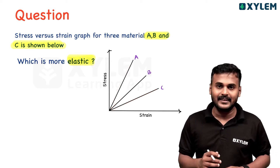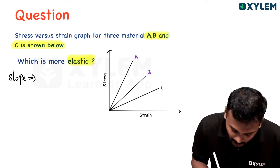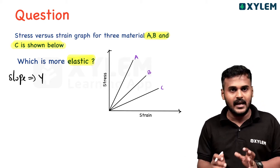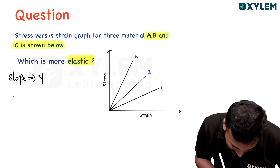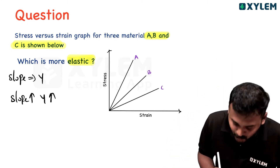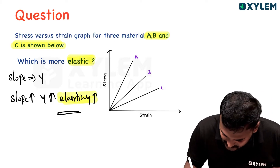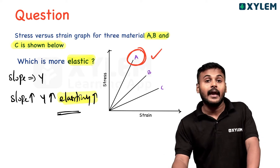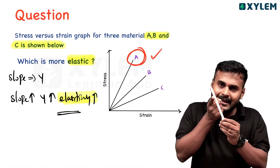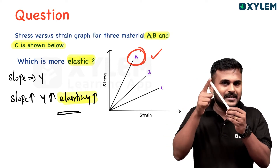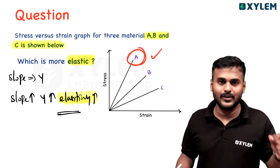For three materials, we can model each of them. The slope of the stress-strain graph gives the modulus of elasticity. The steeper the slope, the higher the modulus of elasticity of the material.